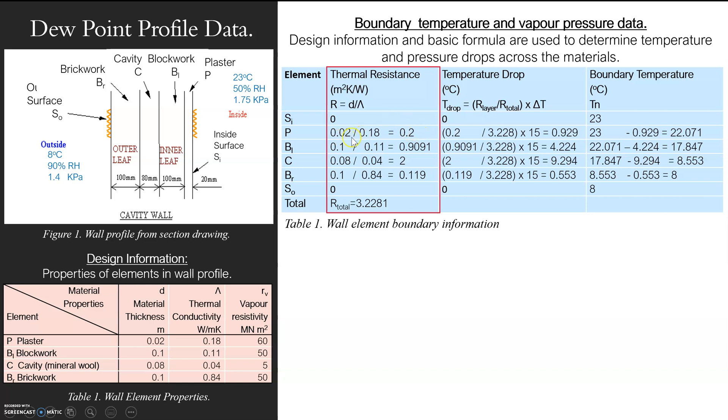So I inverse it and turn it from a conductivity into a resistivity value. So there you go. 0.02 divided by 0.18 and that gives me 0.2. That's my thermal resistance for plaster. I do that for every single element and then I get my total resistance for the whole wall.